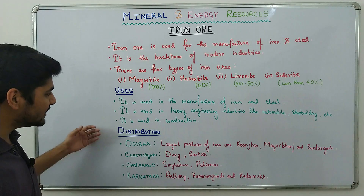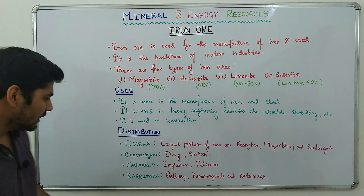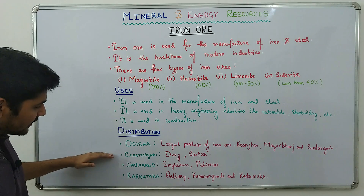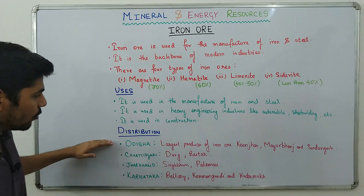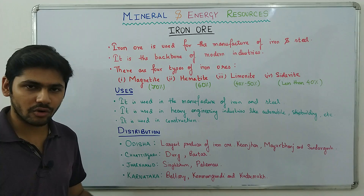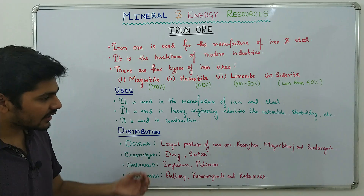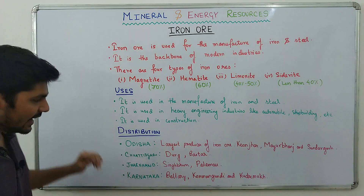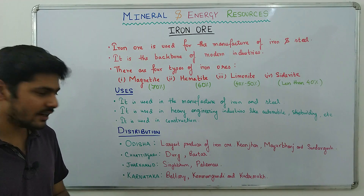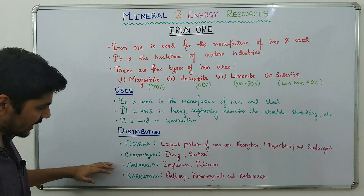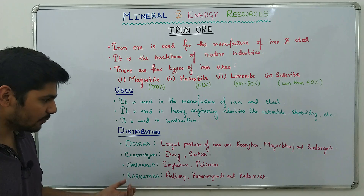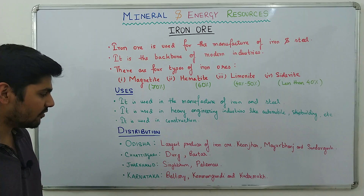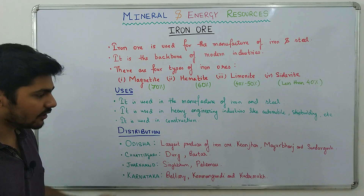The four largest iron ore producing states in India are Odisha, Chhattisgarh, Jharkhand, and Karnataka. Odisha is the largest producer, with locations at Keonjhar, Mayurbhanj, and Sundargarh. In Chhattisgarh, iron ore is found in Durg and Bastar. In Jharkhand, the districts are Singhbhum and Palamau. In Karnataka, iron ore is mostly found in Bellary, Kemangundi, and Kudremukh.